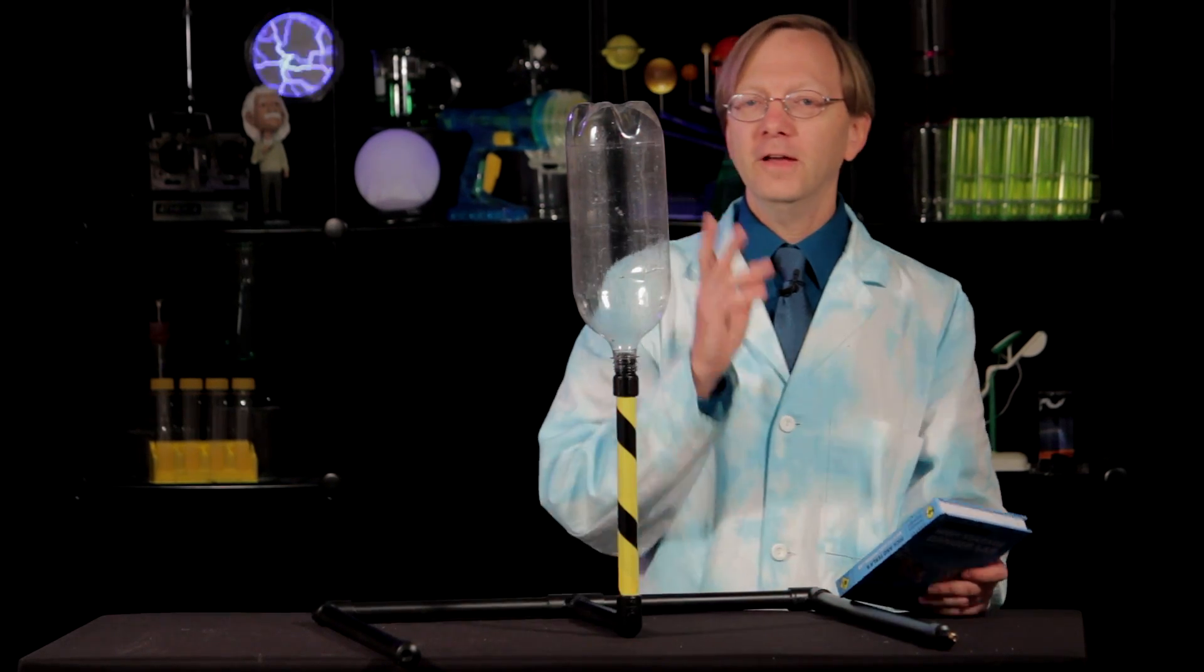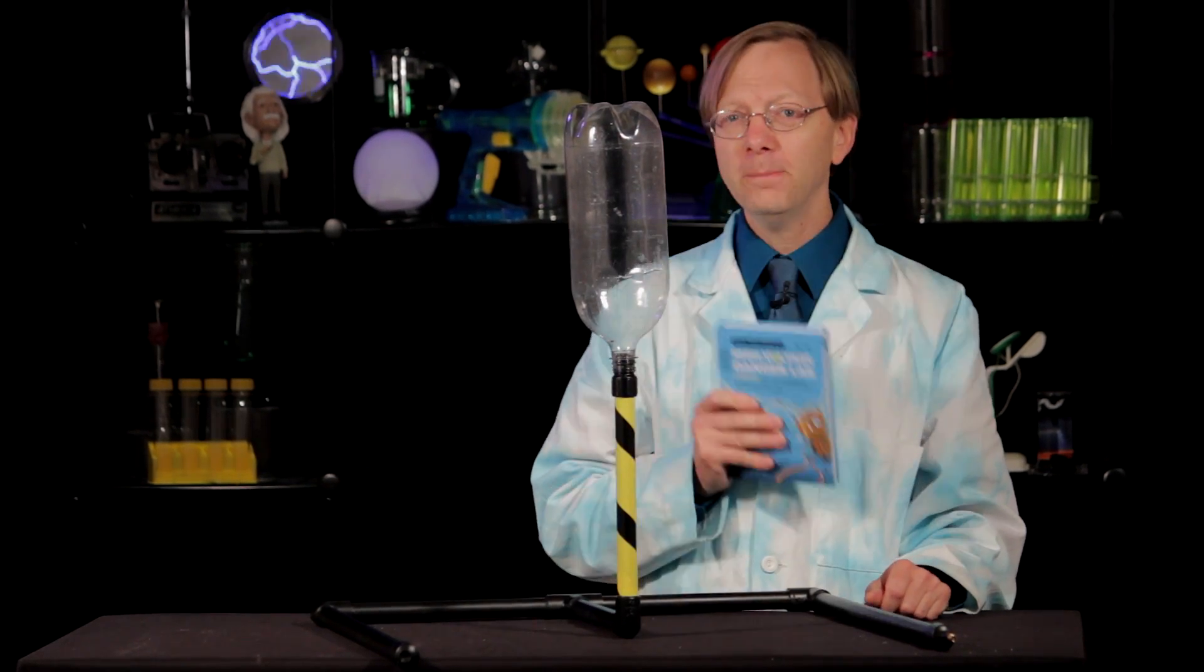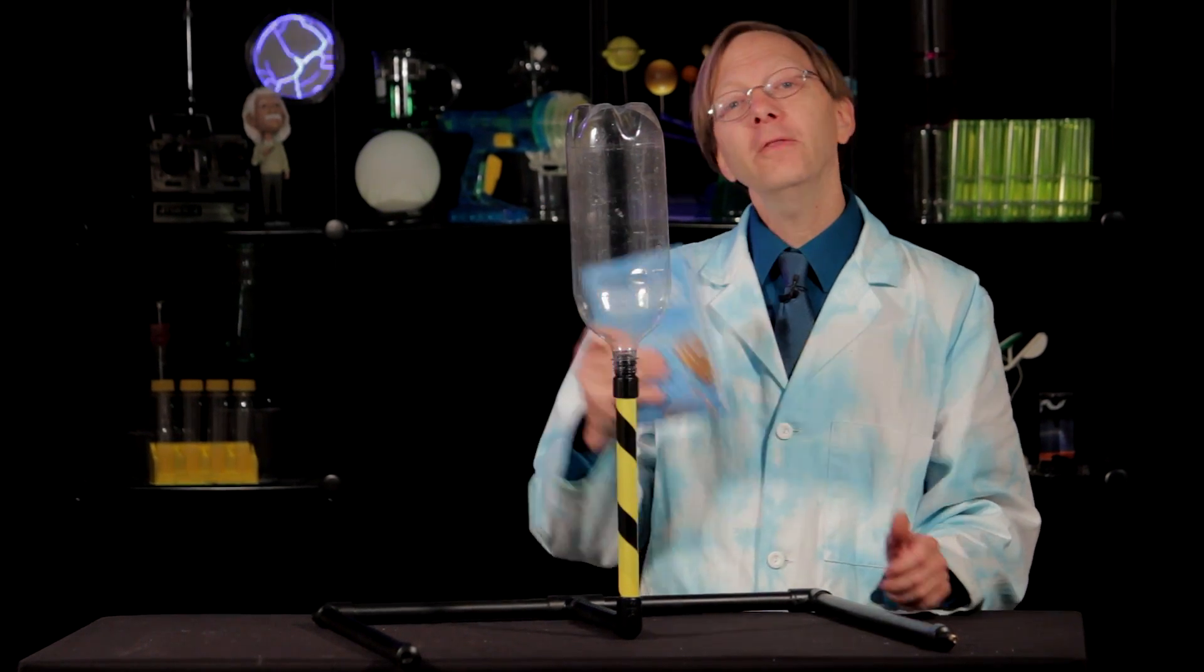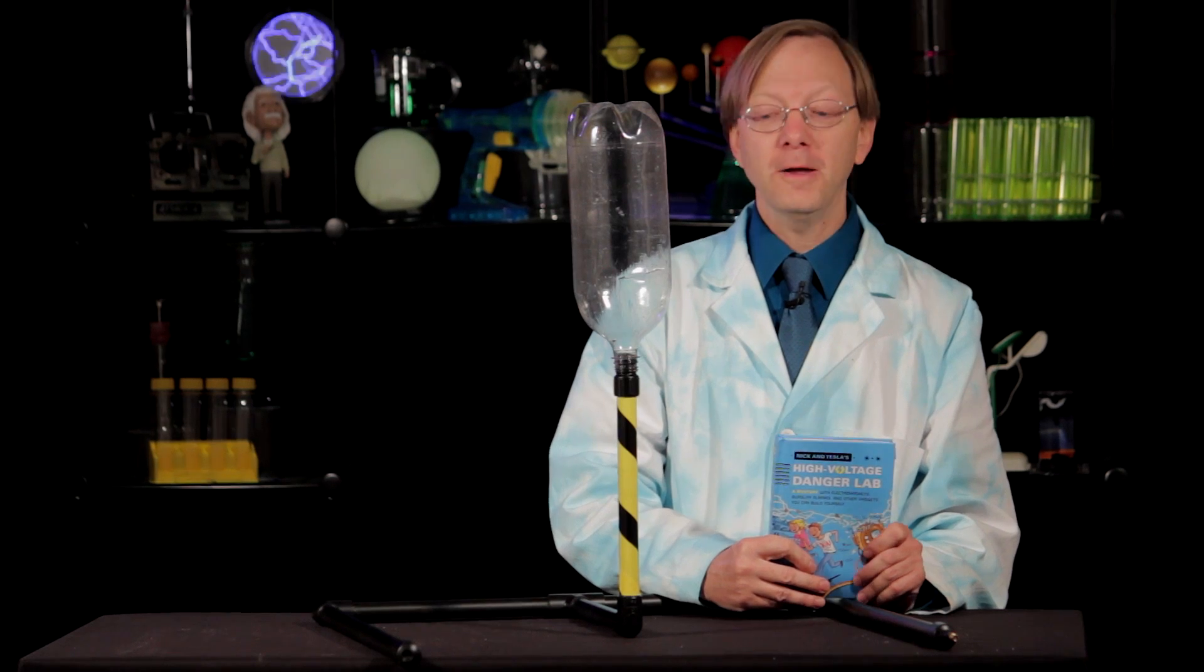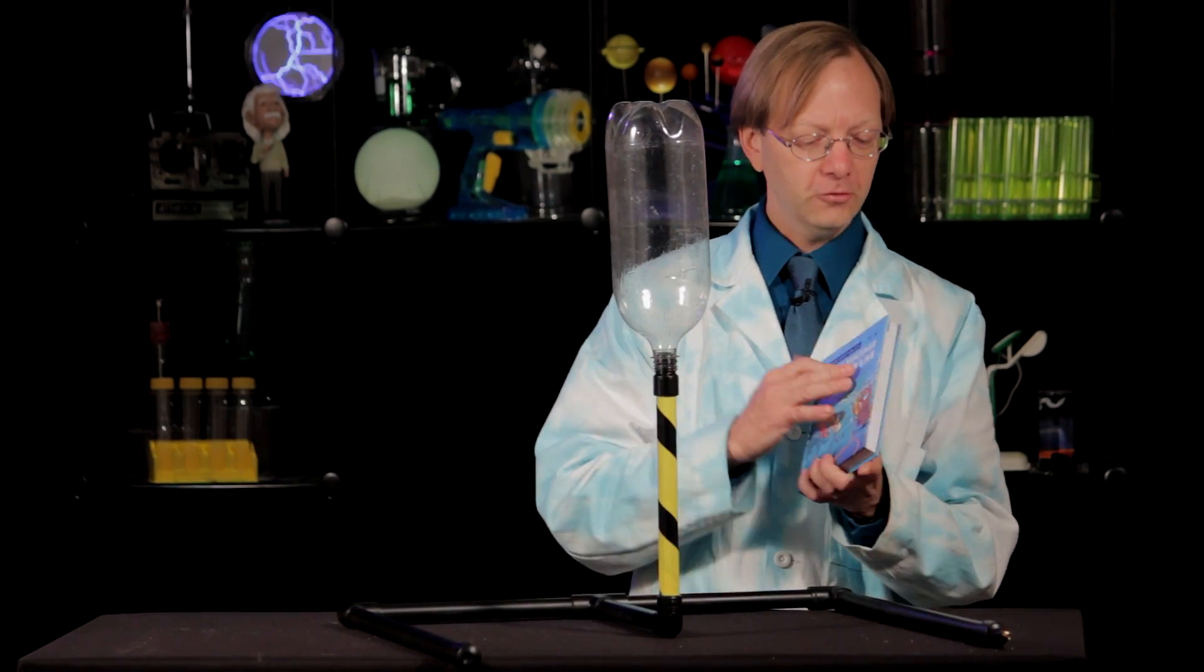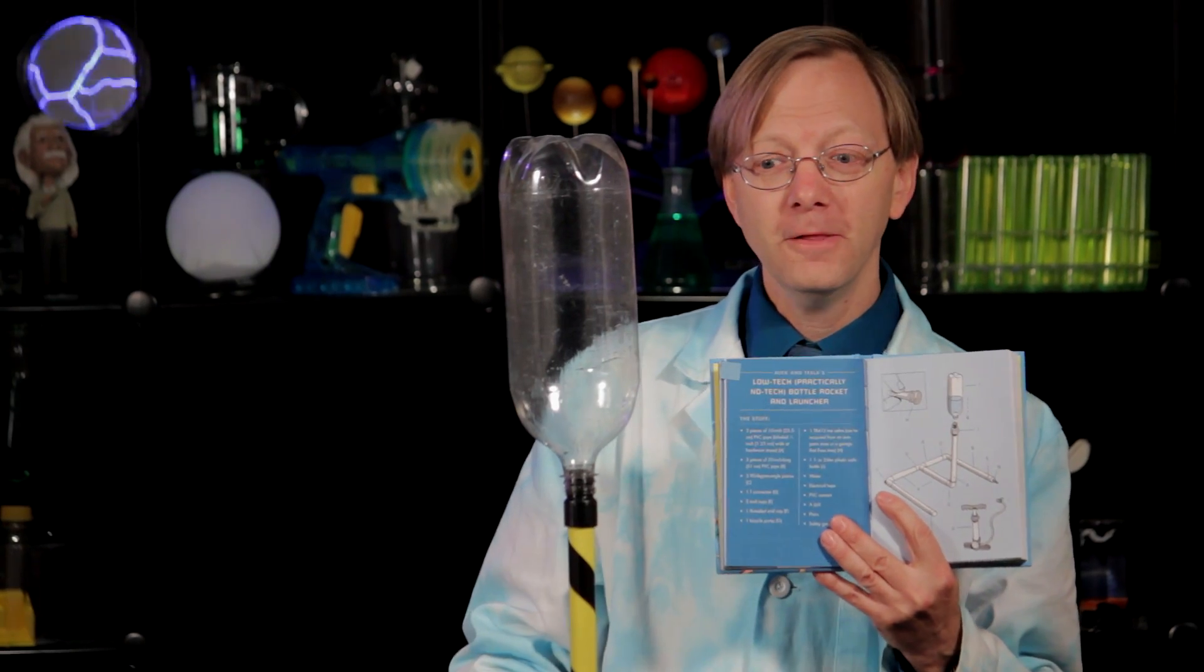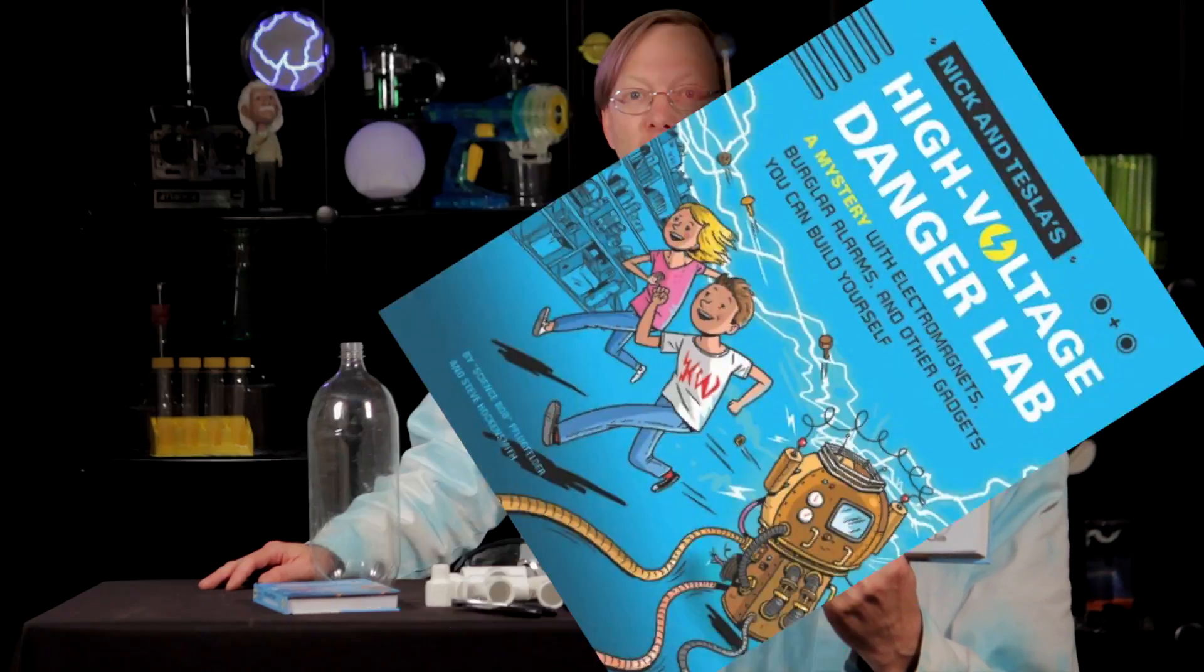Alright Nick and Tesla fans, thanks for tuning in. So in chapter one, Nick and Tesla get a little bored, so what do they do? Well, they build a water-powered bottle rocket just like this one. Now the instructions start on page 36. I'll show you how it all goes together so that you can try it yourself.